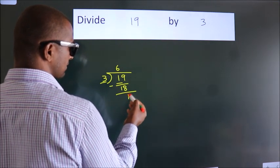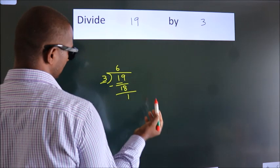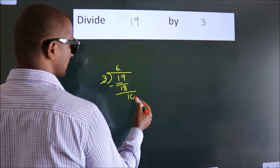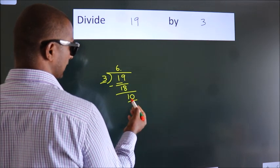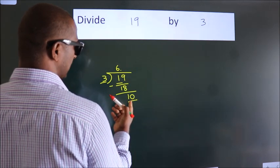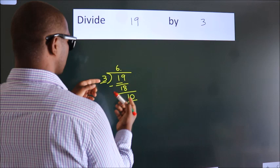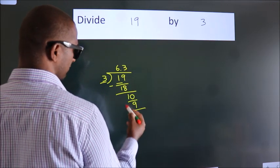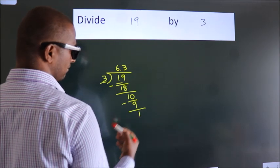After this, no more numbers to bring it down. So what we do is, we put dot, take 0. So 10. A number close to 10 in 3 table is 3, 3 is 9. Now we subtract. We get 1.